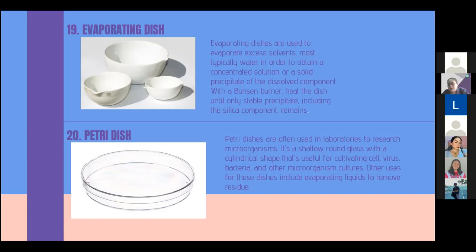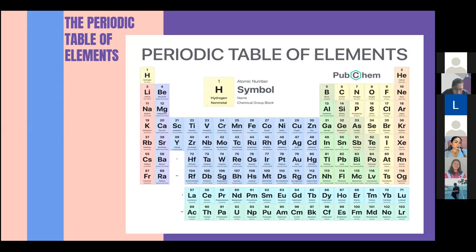Now for the next reporter I will give it to Miss IC Romwaldo. Good morning ma'am. Each row on the table is called a period. All the elements in a period have the same number of orbitals. This starts from one orbital at the top row to the seventh orbital at the bottom row. Each row increases by one orbital. Elements in the same period have similar physical properties. Each column on the table is called a group. All the elements in each group have the same number of electrons in their outer shell, which we also known as the valence electrons. Elements in the same group react with other elements in similar ways.